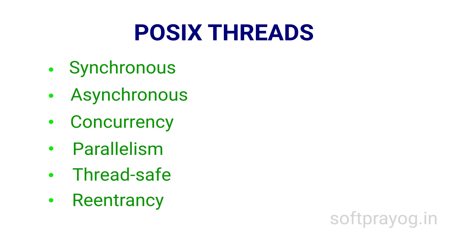Reentrancy: when we say a function is reentrant, we mean that it is efficiently thread-safe. It has been coded in such a way that it can be efficiently called from multiple threads. Reentrant functions avoid using static data. Also, any kind of synchronization between threads is to be avoided. And often, the interface is designed so that pointers to the data to work with are provided by the caller.